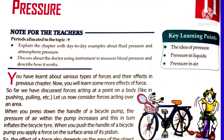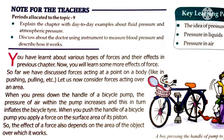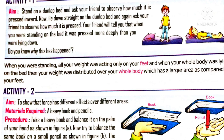For this, let us move on to Activity 1. You are going to stand on a dunlop bed, which is made of a soft plastic-like material, and ask your friend to observe how much it is pressed inward. Now you are going to lie down straight on the dunlop bed and again ask your friend to observe how much it is pressed. Your friend will definitely tell that when you are standing on the bed, it was pressed more deeply than when you are lying on it.